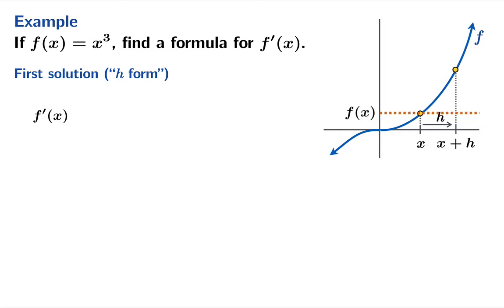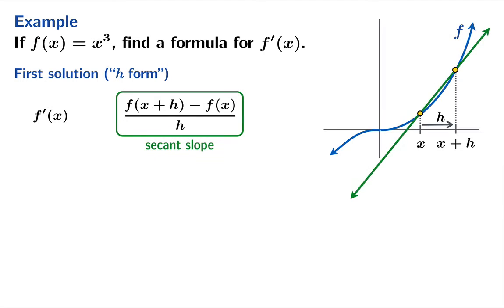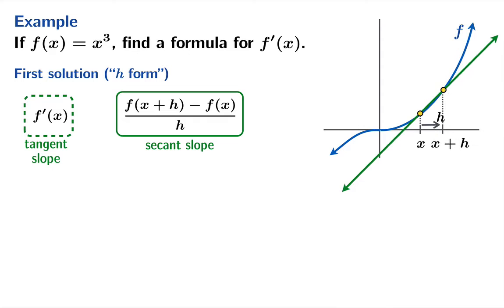And now our change in function value is going to be f of x plus h minus f of x and our change in argument is just h. So here's our secant slope and now in order to get the tangent slope we need to look at the limiting value of the secant slope as h goes to zero.